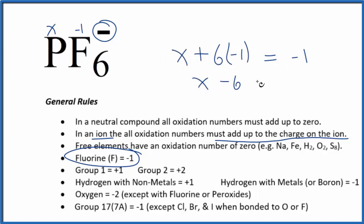So x minus six equals minus one. We'll add six to both sides. That's going to equal a positive five.